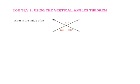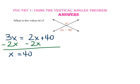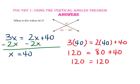Now pause the video and do the you try question. To find the value of x, we make the equation 3x = 2x + 40 because the angles are vertical angles. Using the subtraction property of equality, subtract 2x from each side, so x equals 40. Remember to substitute 40 for x to check your answer. Since 120 equals 120, we know we are correct.